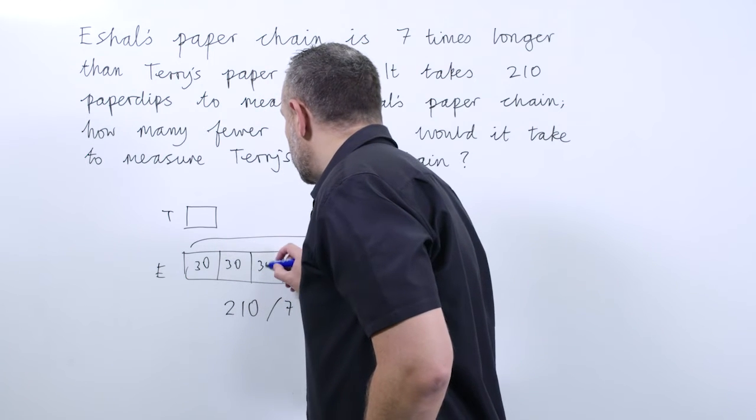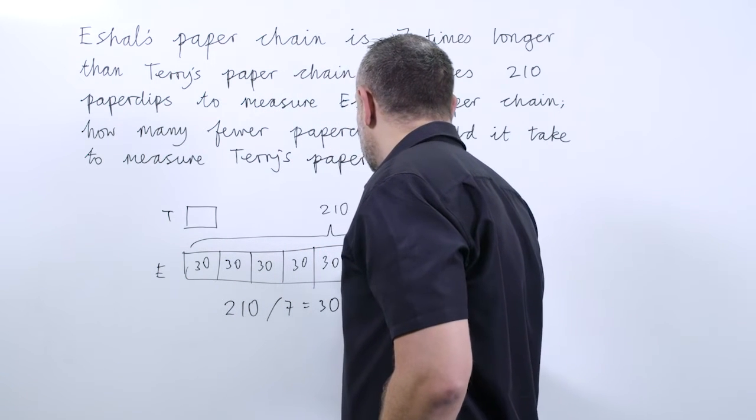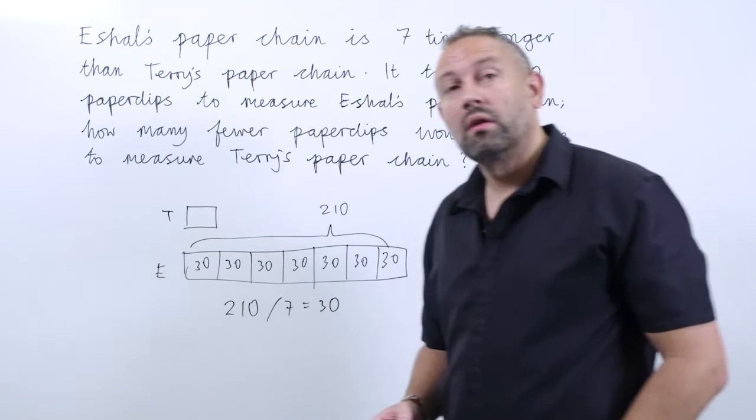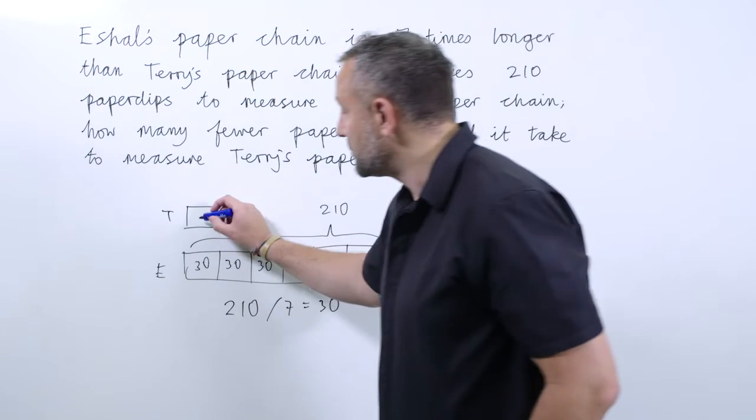So if each part is worth 30 on Eichel's paper chain, then Terry's part must also be 30.